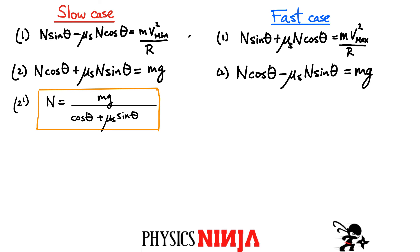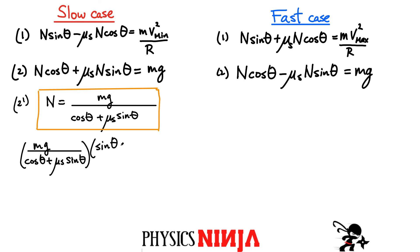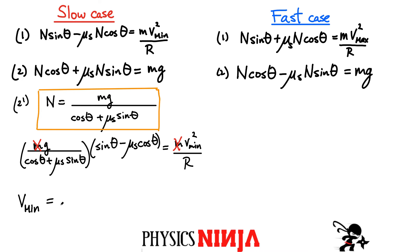Now I substitute that expression for N into Equation 1. The normal force appears in both terms there, so substituting the whole value in, we get: the quantity (N)(cos θ plus μ_s sin θ) multiplied by (sin θ minus μ_s cos θ) equals m times v_min squared over r. Notice that mass appears on both sides and cancels out — the minimum speed doesn't depend on the mass of the car. Bringing r to the other side and taking the square root gives the expression for v_min.